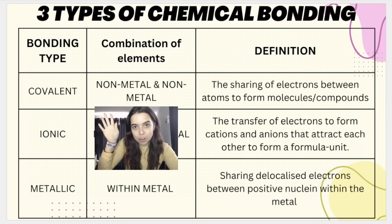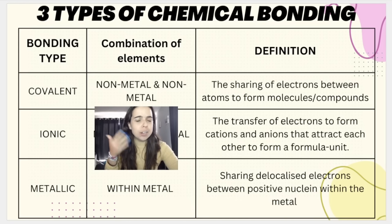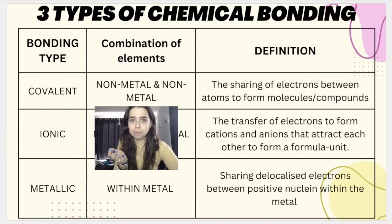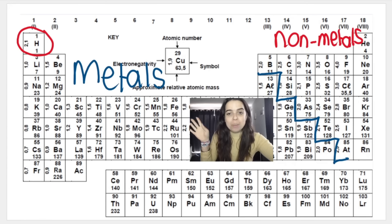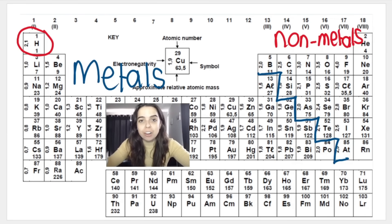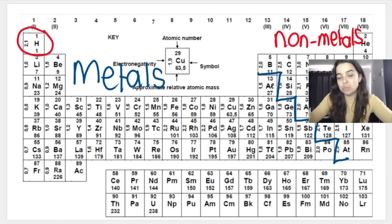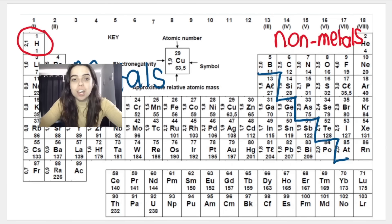It's very important to note that covalent bonding takes place between a non-metal and a non-metal. There is a dividing line on the periodic table that separates metals, seen on one side, with non-metals seen on the other side.